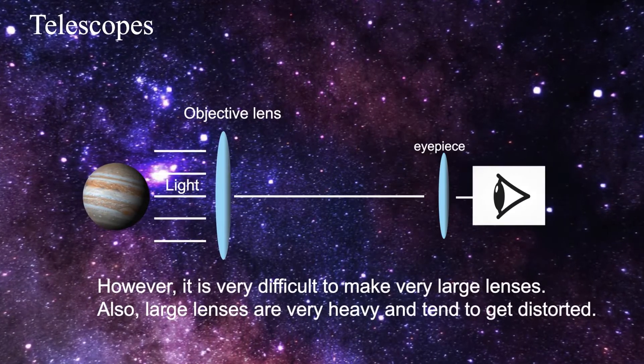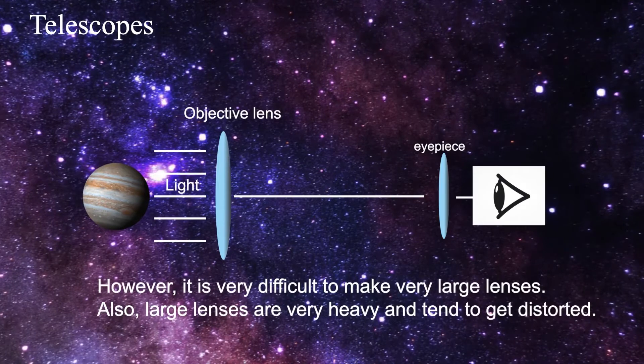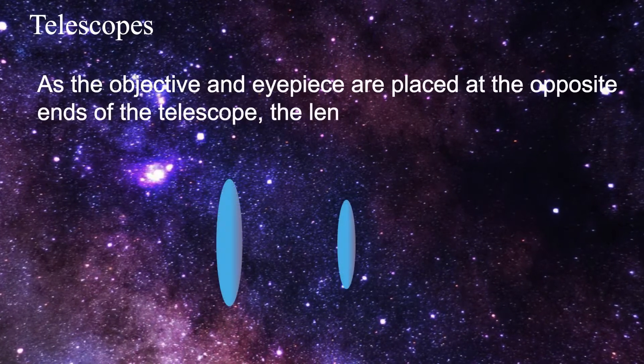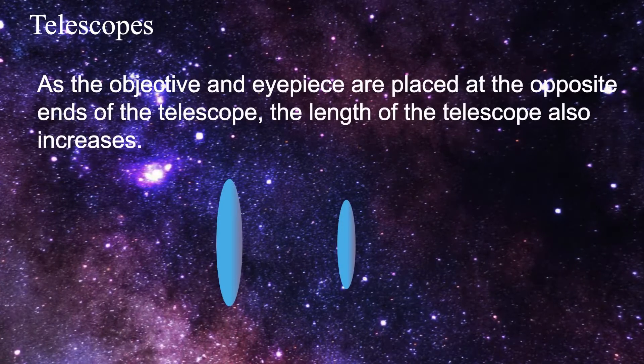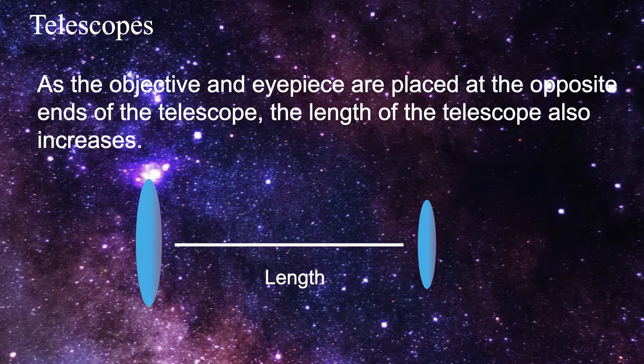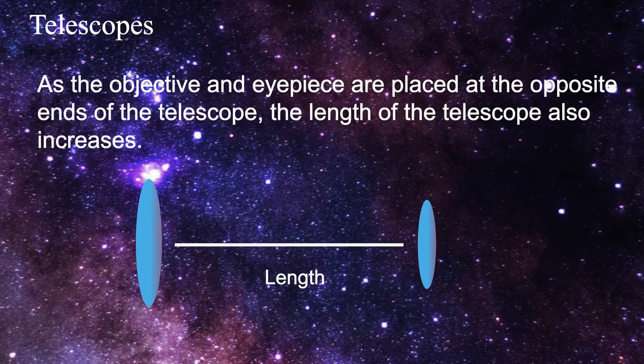Second, as the objective and eyepiece are placed at the opposite ends of the telescope, the length of the telescope also increases with the increase in the size of the lenses and the telescope becomes difficult to manage.